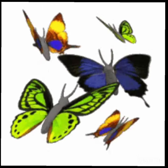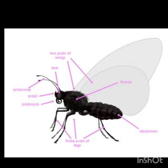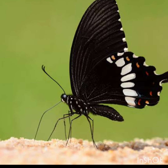Butterfly has two wings, a body consisting of three parts: head, body and tail, two antennas and six legs.